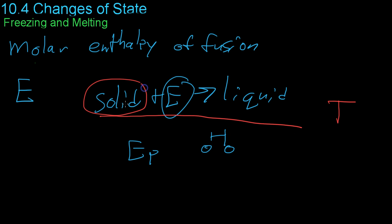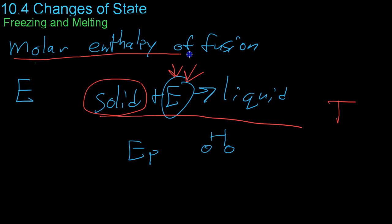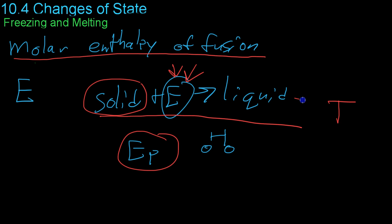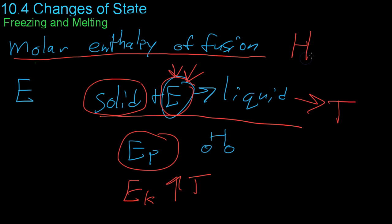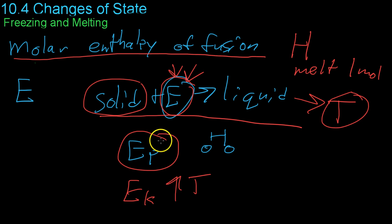While you still have any solid left and you're adding energy to the reaction, what you're doing is adding energy according to the molar enthalpy of fusion — that is, you're adding to the potential energy between molecules, thus creating a liquid. However, this liquid is still at the melting and freezing point of the material. You're not adding energy to increase the kinetic energy and thus increase the temperature; you're adding energy and increasing the potential energy. That is what the molar enthalpy of fusion is all about — it is simply a measure of the heat required to melt one mole of a substance, and that heat goes into potential energy, not temperature.